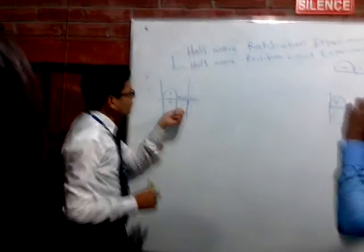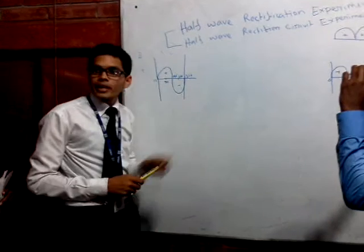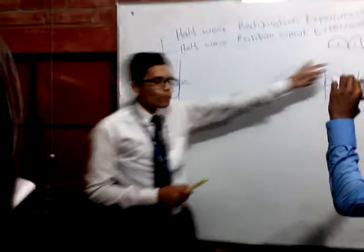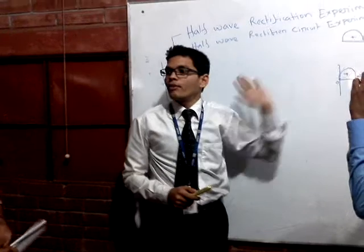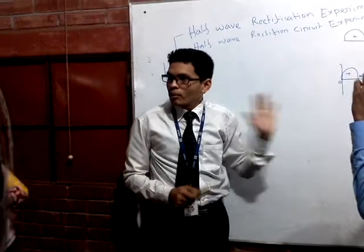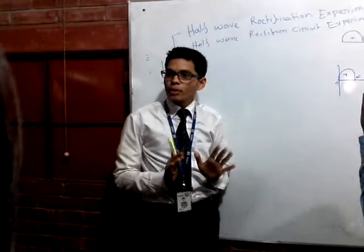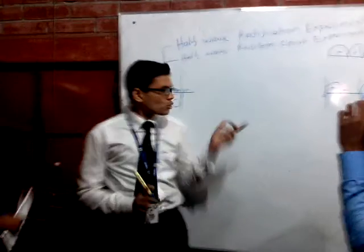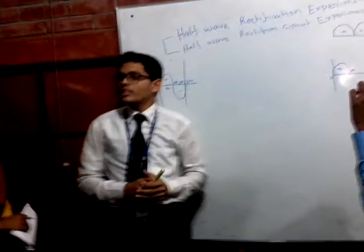If the negative portion can also appear at the output — if we can do that — then it will be a full-wave rectifier. And the full-wave rectifier arrangement is different. So now we will draw the circuit diagram of the half-wave rectifier.